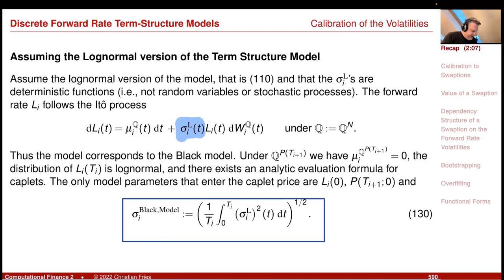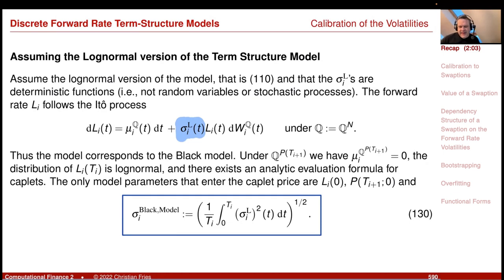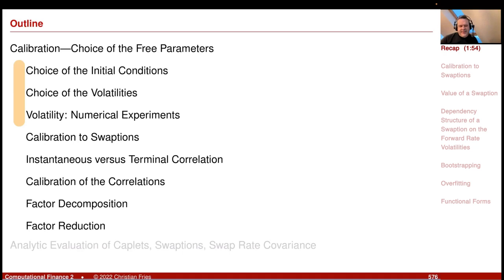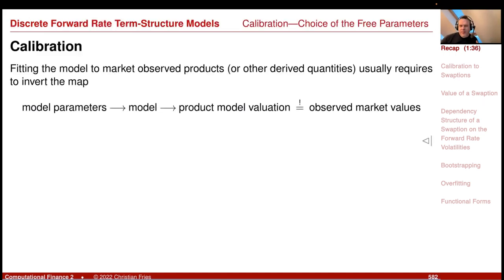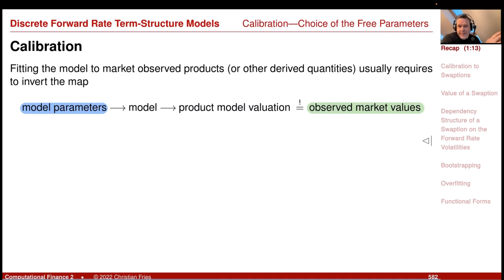You get some condition on the sigma parameter if you like to cover caplet prices by just setting our volatility function to the Black implied volatility. What we did so far was find very nice choices for the parameters to match given prices — just set the parameter to the right value and you will recover the observed market price. More generally, calibration is: how do we choose a model parameter to match observed market values?